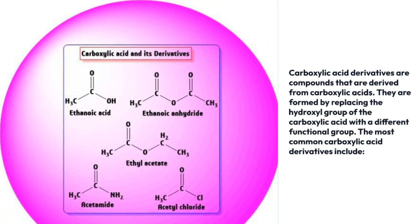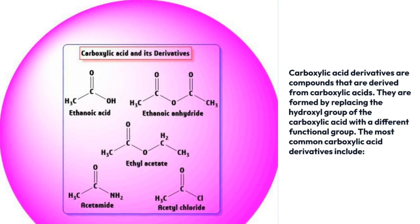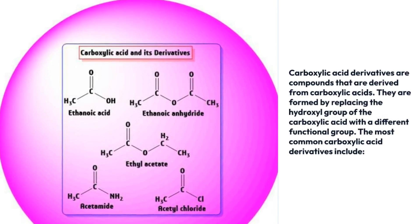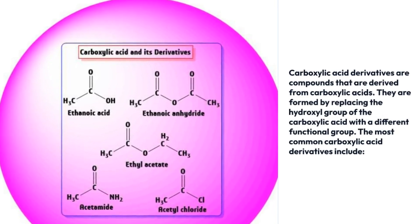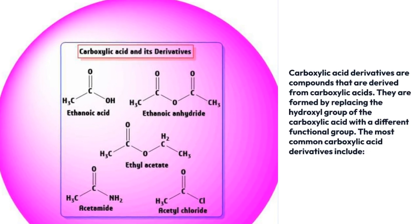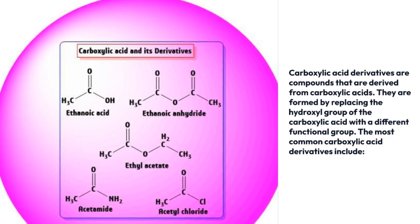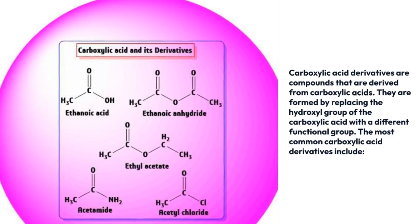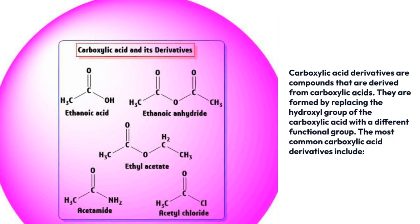Carboxylic acid derivatives are compounds that are derived from carboxylic acids. They are formed by replacing the hydroxyl group of the carboxylic acid with a different functional group. The most common carboxylic acid derivatives include amides, acid halides, esters, and anhydrides.